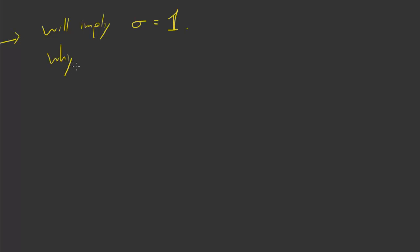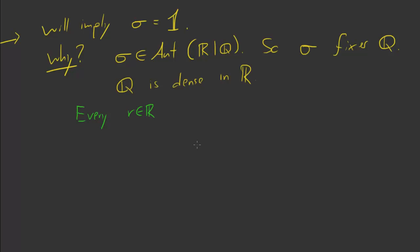So, why do we care about showing that sigma is continuous? Well, the reason why we care about this is that this is going to be enough to imply that sigma is trivial. This will imply that sigma is equal to the identity. So, why is that? Well, remember sigma is inside of Aut(R|Q). So, sigma fixes Q. And Q, this is the important fact, is dense. It's dense in R. So, maybe what we care about is that every real number can be written as a limit. r is equal to lim, as n goes to infinity, of qn. Where the qn are rational numbers. So, Q is dense in R. That's telling us this.